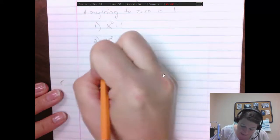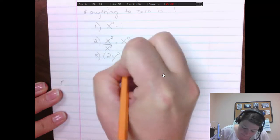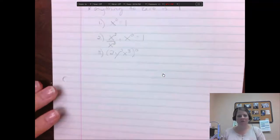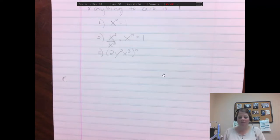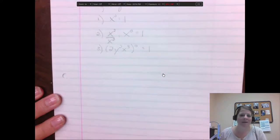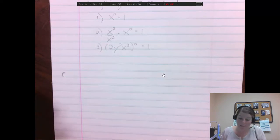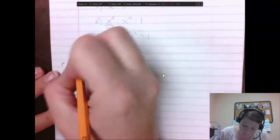I can make you, though, anything to the 0 power. It can be ugly. 2y squared x to the third, all to the 0. What is this going to equal? 1. Doesn't matter what it is. If you have anything to the 0 power, it equals 1. So that's our 0 power rule, I should say. Let's look at the negative exponents.